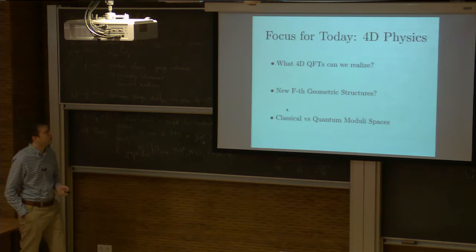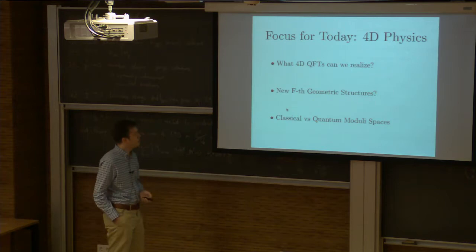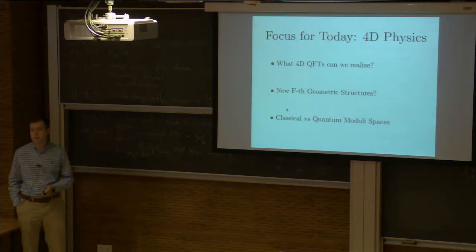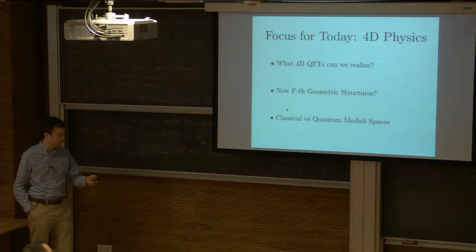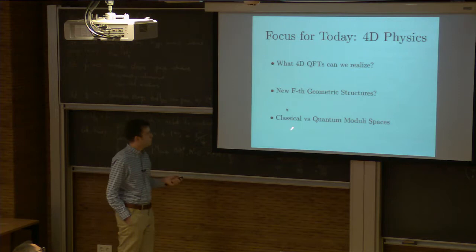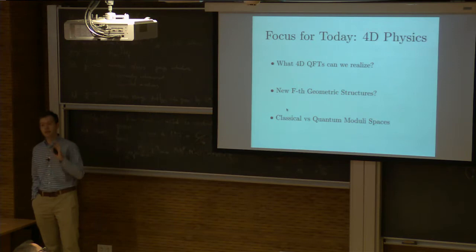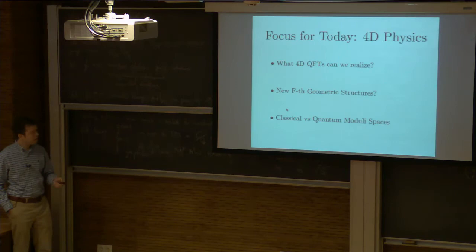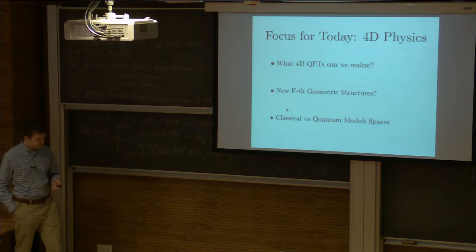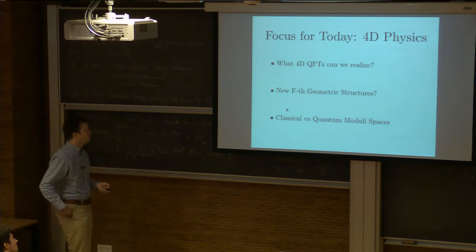I want to talk about four-dimensional physics and what kinds of four-dimensional quantum field theories I can produce by compactifying 6D CFTs in various ways. We're going to run the arrow of implication in both ways — engineering things from F-theory and seeing what F-theory points to in terms of new geometric structures that lead to novel-looking four-dimensional field theoretic structures. With only four real supercharges, classical F-theory geometry is only the starting point, and we should generically expect quantum corrections to whatever classical geometry we write down.